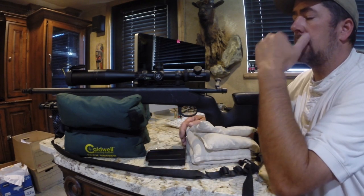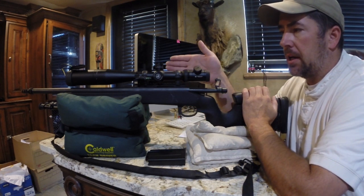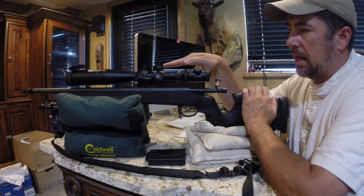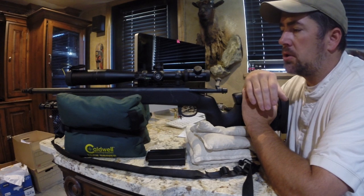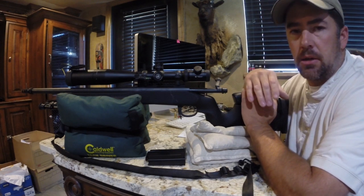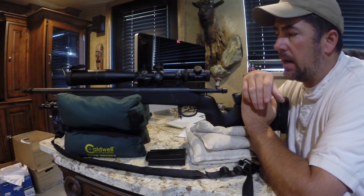The first thing we need to talk about is the setup of the scope. The scope needs to be leveled on the gun, and there's different cant to the scope that you can use. For really long-range shooting, 600-plus yards, we're going to go out to 1,000 on this rifle. This rifle is a .308.